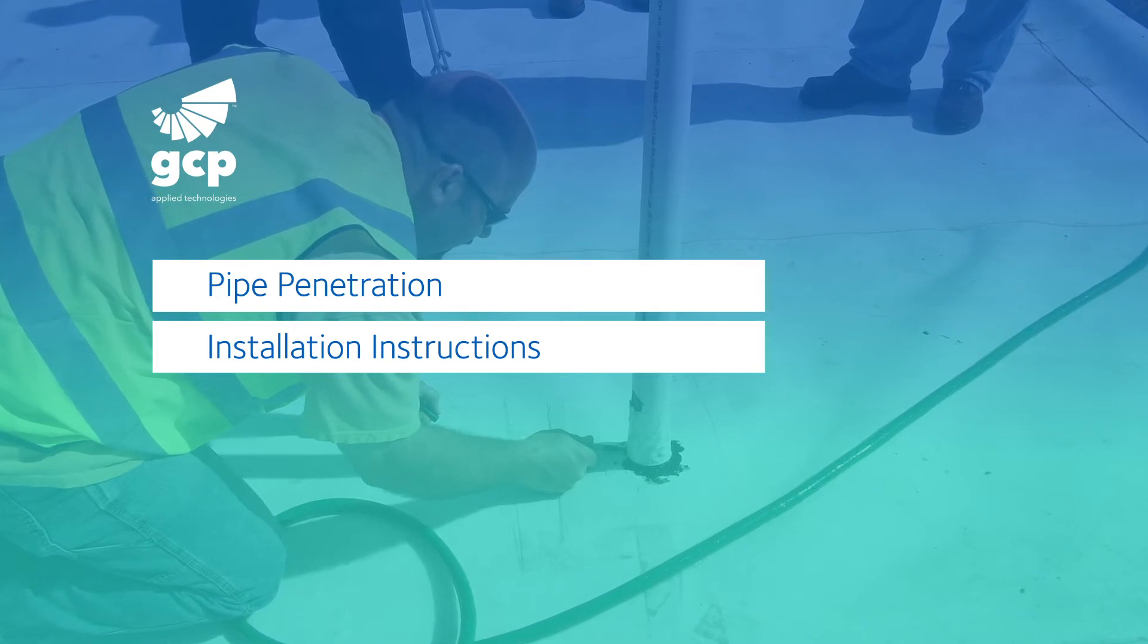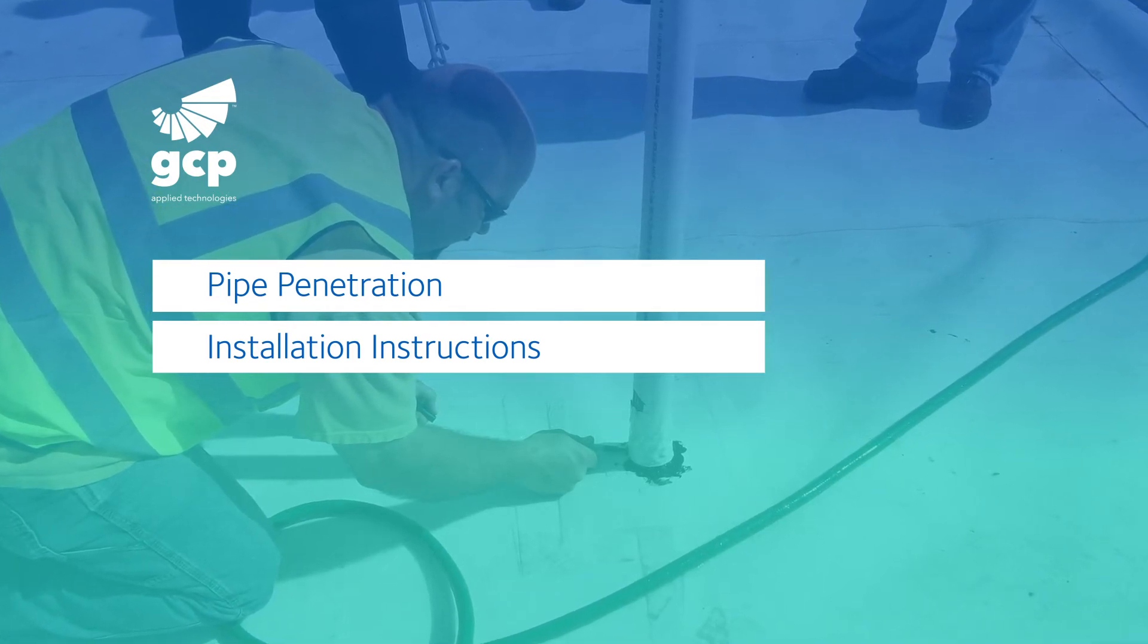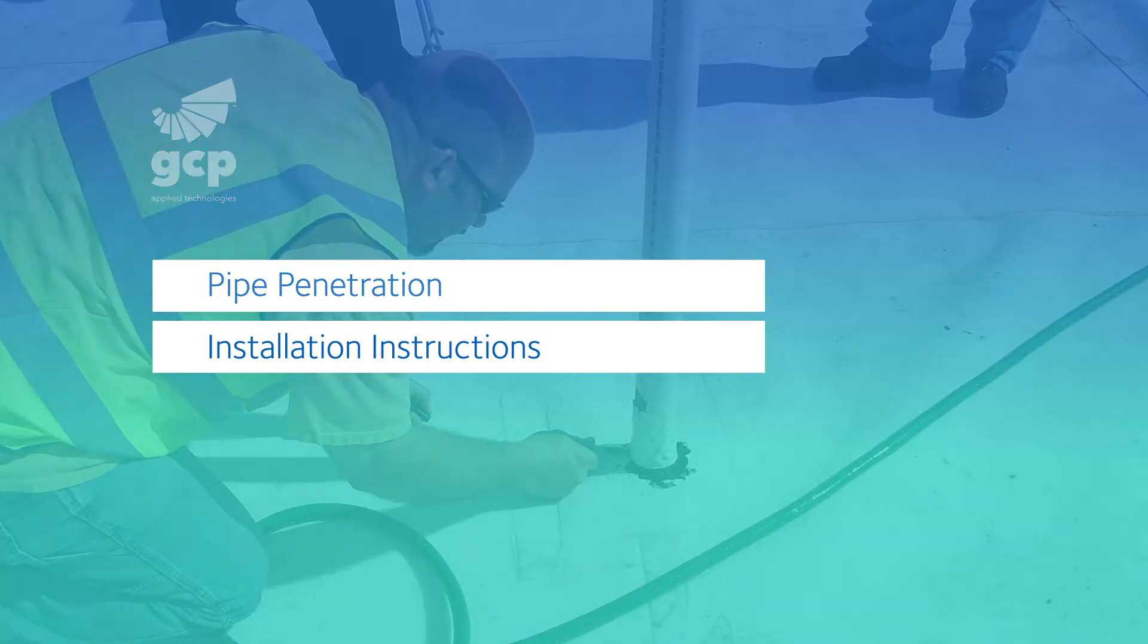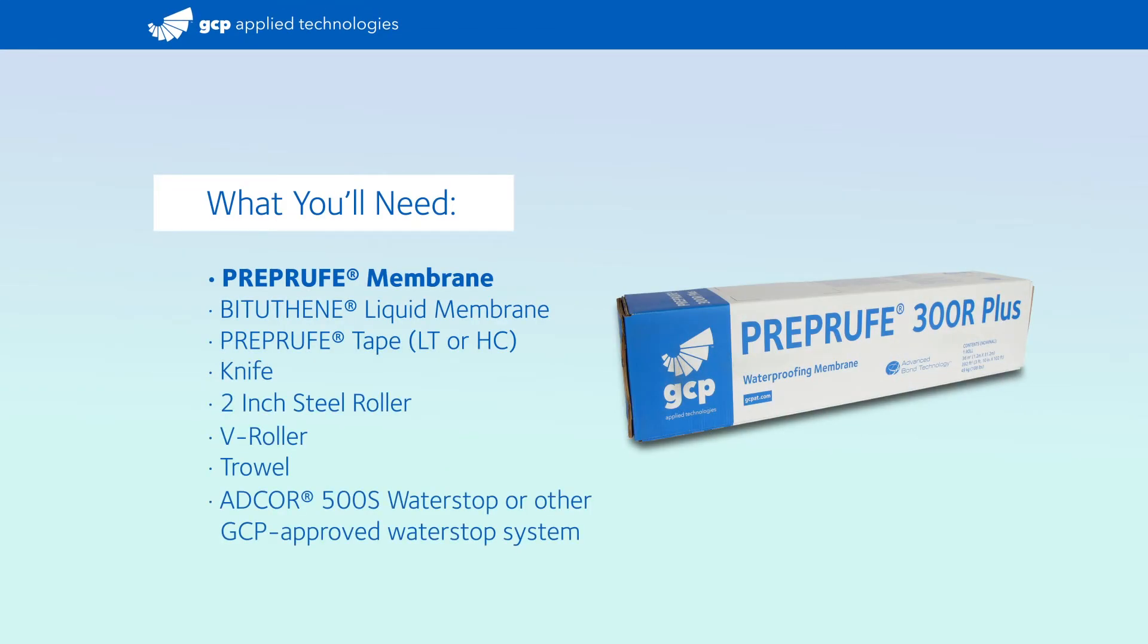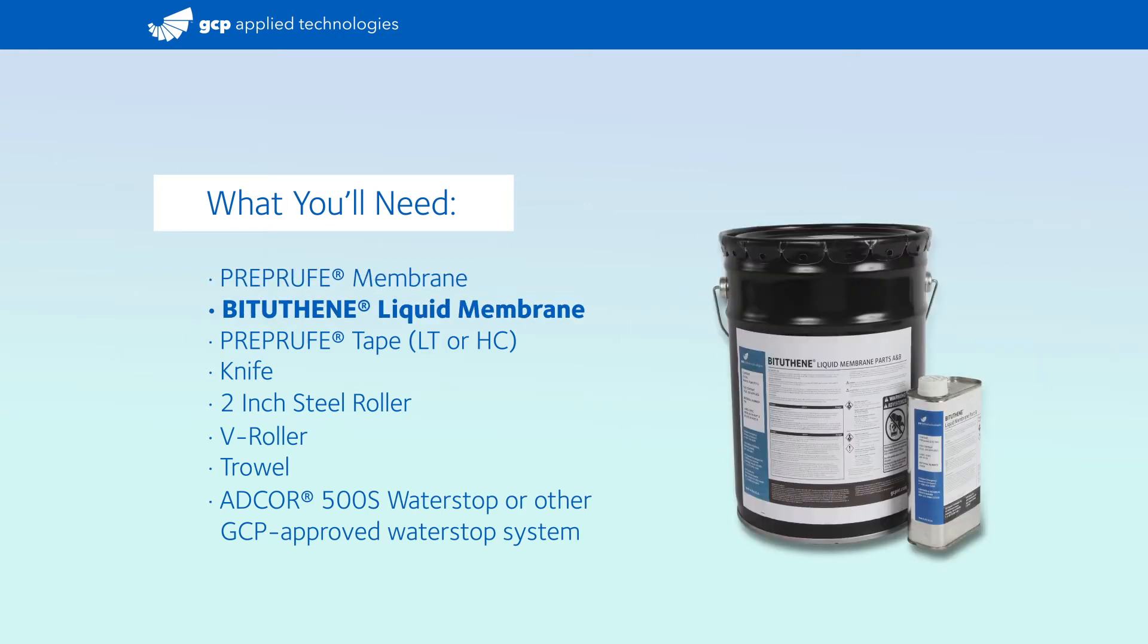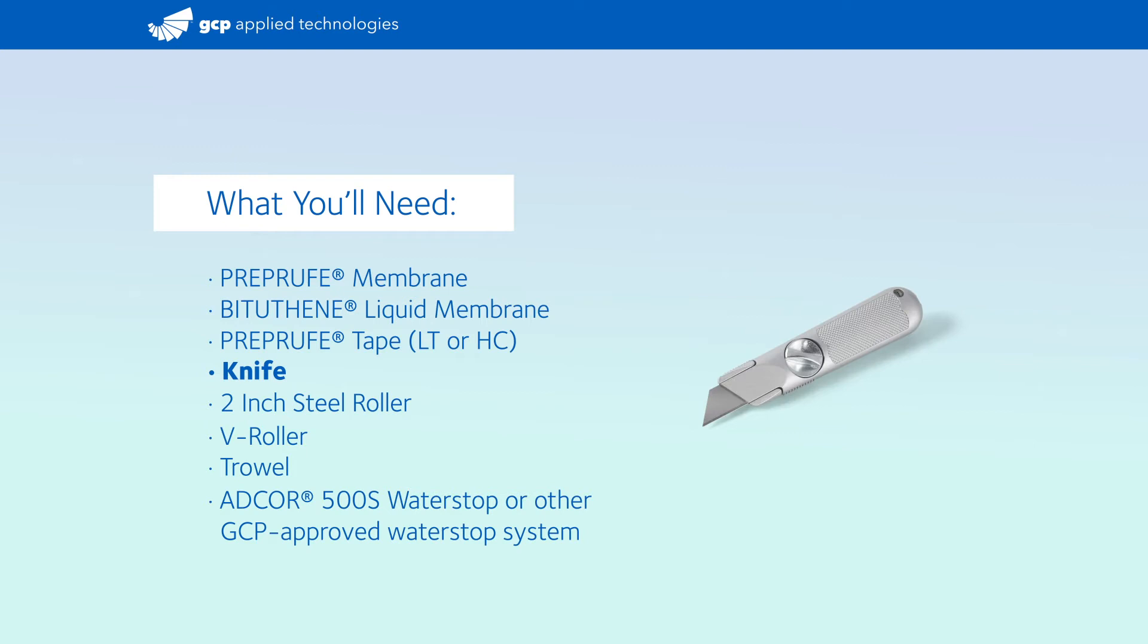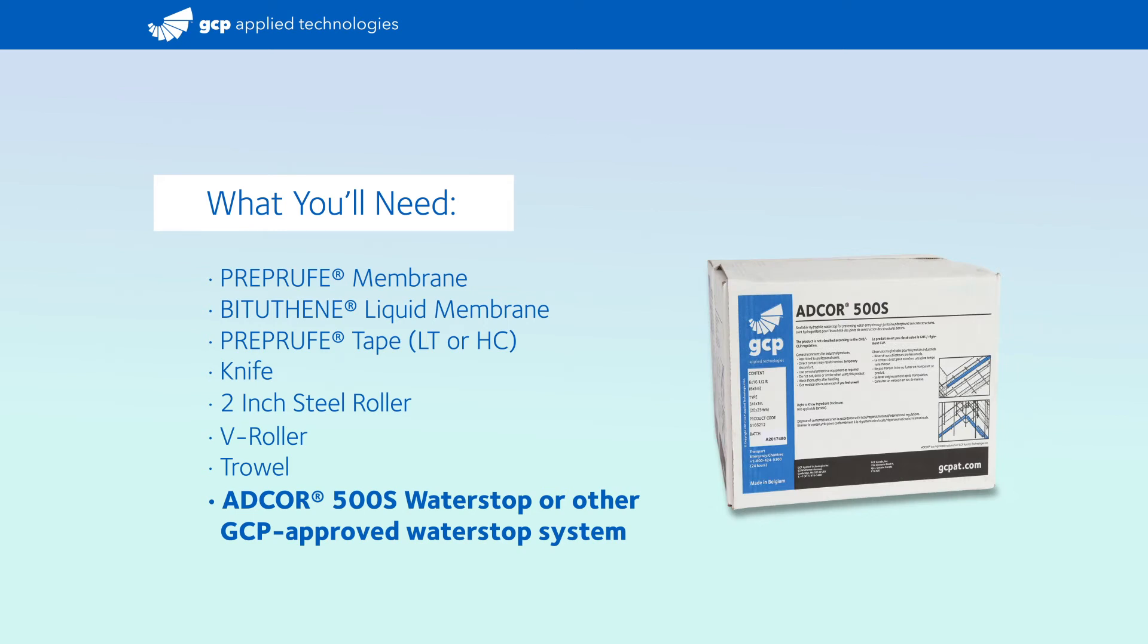The recommended approach involves cutting and dry-fitting all patches before mixing and applying the Biguthane liquid membrane. What you'll need: pre-proof membrane, Biguthane liquid membrane, pre-proof tape, knife, roller, V-roller, trowel, an ADCOR 500S or other GCP-approved water stop system.